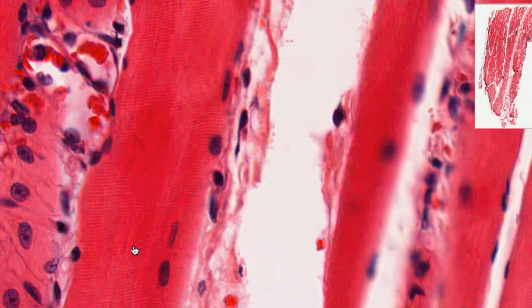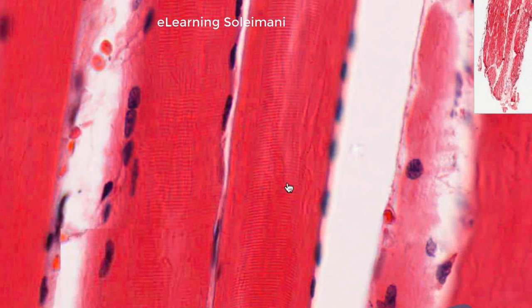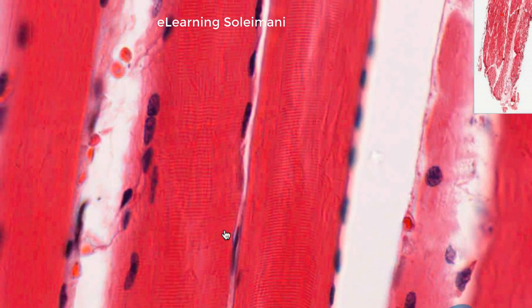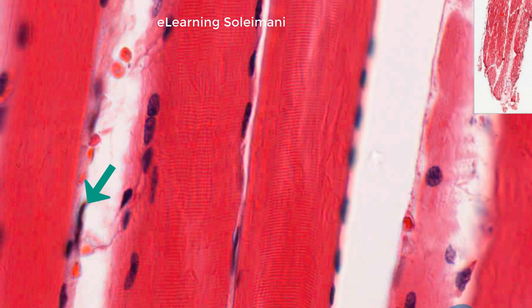Skeletal muscle cells have multiple nuclei, and these nuclei are located right beneath the cell membrane. The nuclei of fibroblast cells are also visible between the muscle fibers.